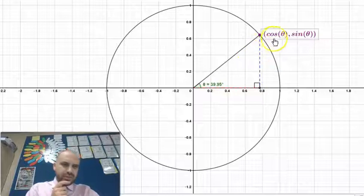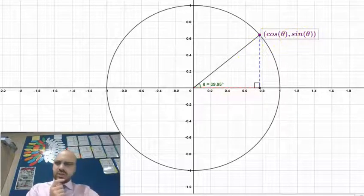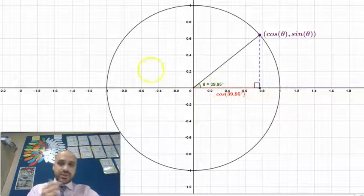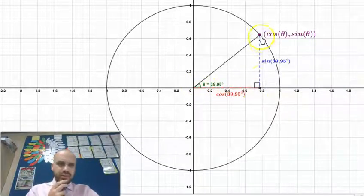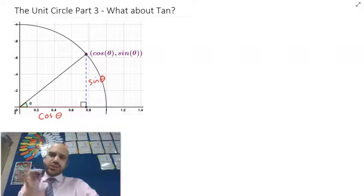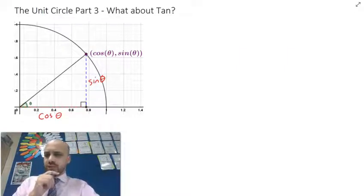Well, remember that the reason this is cos theta and sine theta is because this length here is equal to cos theta. And this length here is equal to sine theta. So when I generalize that, what do I get?